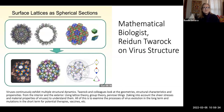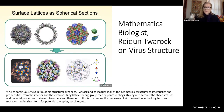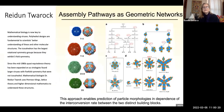Twarock describes how viruses continuously exhibit these multiple structural dynamics, both on the inside and the outside. She uses lattice theory, group theory, and Penrose tiling. They take into account the shear stress and material properties of viruses to understand them. They examine the process of virus evolution in the long-term, mutations and assembly processes, in order to create therapies and vaccines. They've done a lot of work on remdesivir. She looks at these assembly pathways as geometric networks, advancing the quasi-equivalence theory.